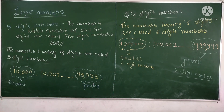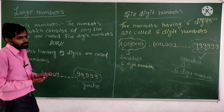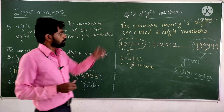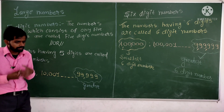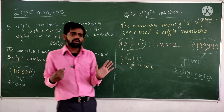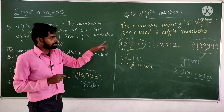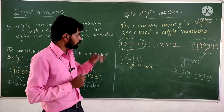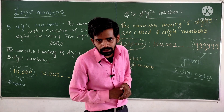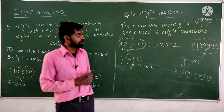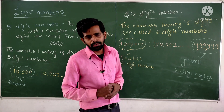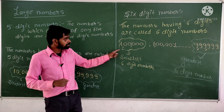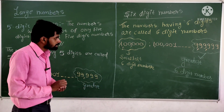Let's move towards six digit numbers. The numbers having six digits are called six digit numbers. The six digit numbers start from one lakh — one lakh, one lakh one, one lakh two, one lakh three, and so on, up to nine lakh 99,999. So nine lakh 99,999 is the greatest six digit number, and one lakh is the smallest six digit number.